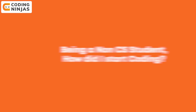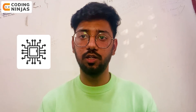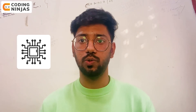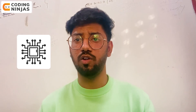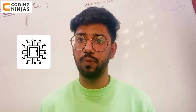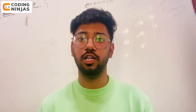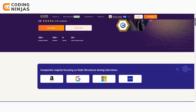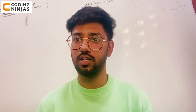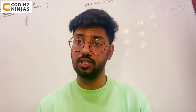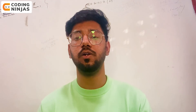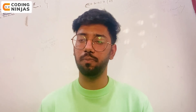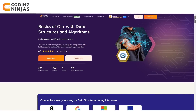The first question is: being a non-CSE student, how did I start coding? What was my motivation and which course did I take? Since I was in a circuital branch, I had a lot of friends who started coding. Not many companies recruit from electronics, so that's why I went into coding. I asked my friends about which course to take, and many were doing the JASKA DSA Foundation course. I liked how they explained concepts, so I chose that course — the DSA Foundation course.